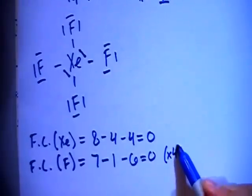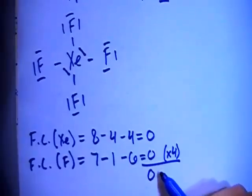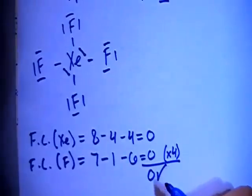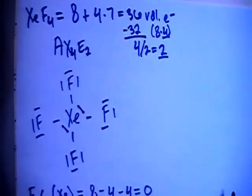And remember times that times 4. But that's still going to be 0. So the overall formal charge of this compound is going to be 0, which is what we're looking for because it's not a charged particle. It's just neutral.